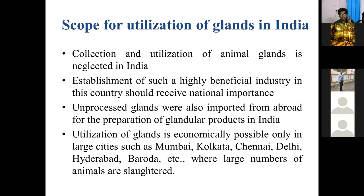Previously, India used to procure unprocessed glands from foreign countries for preparation of hormones and enzymes. We must focus on collecting glands from animal carcasses in Indian conditions. The chances of collection and utilization are greater in larger metro cities like Mumbai, Kolkata, Chennai, and Delhi, where large numbers of animals are slaughtered, providing sufficient glands for extraction of hormones and enzymes for pharmaceutical and industrial preparation.